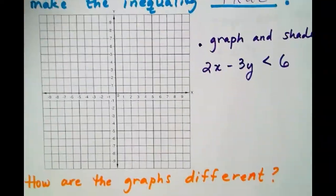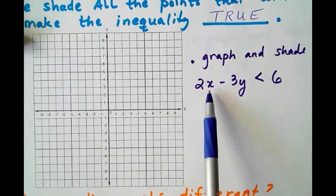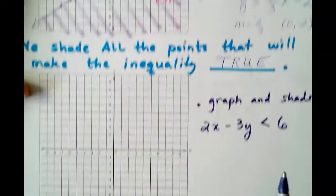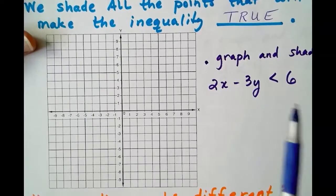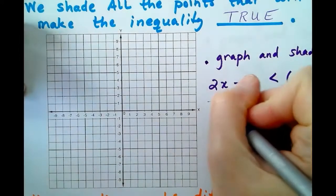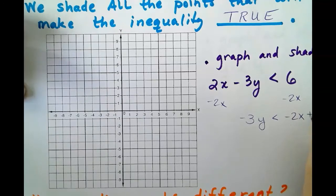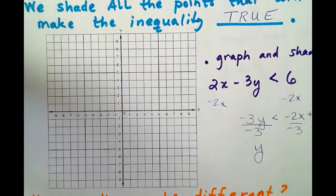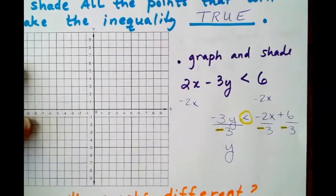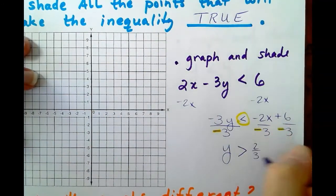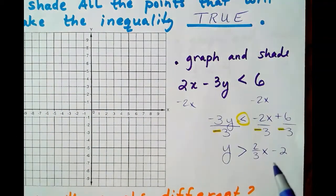Now let's look at how the graph would differ if we changed to 2x minus 3y is strictly less than 6. Solving for y the same way — minus 2x on both sides gives negative 3y is less than negative 2x plus 6. Divide by negative 3 and flip the sign: y is strictly greater than positive 2/3 x minus 2.